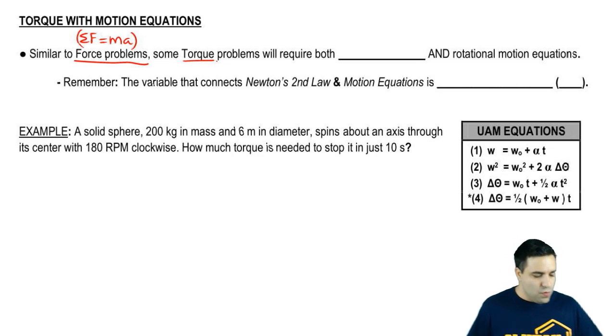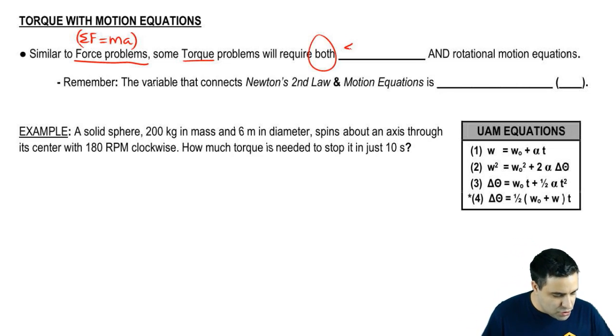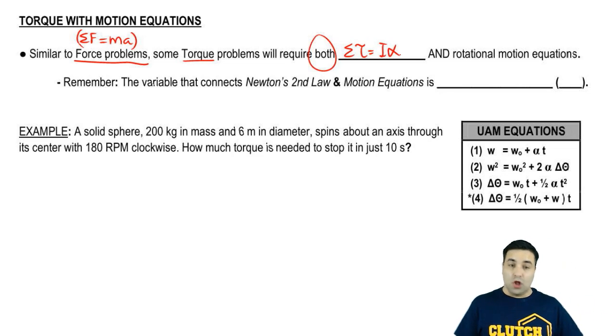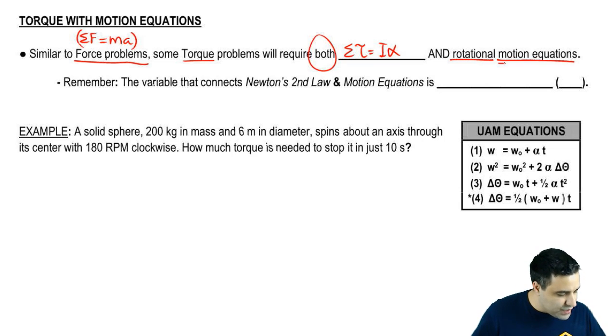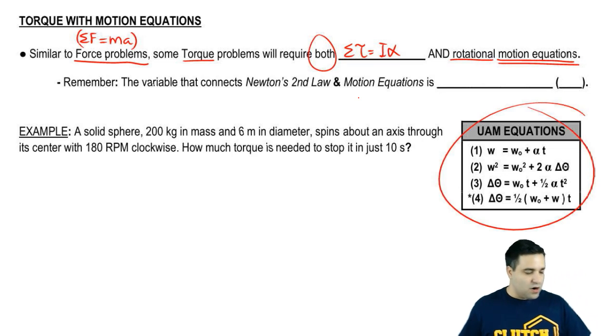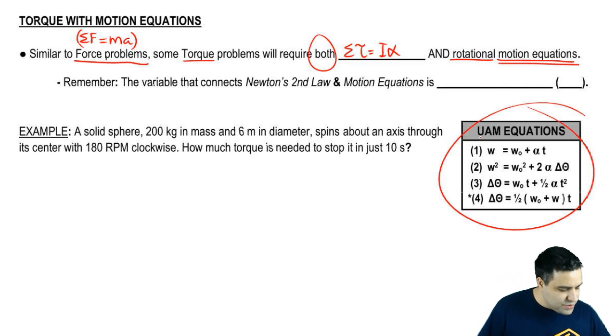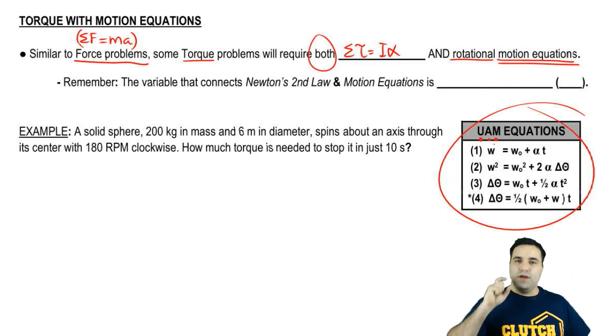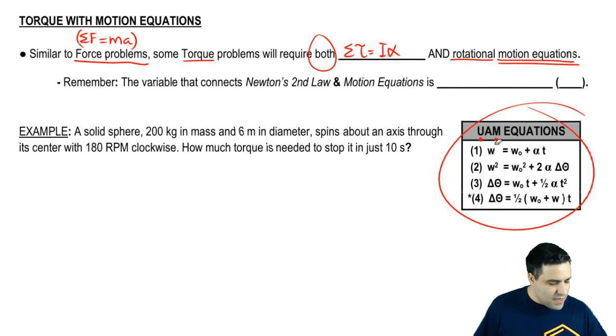Some torque problems will require both torque equals I-alpha, which is the rotational version of Newton's second law, and rotational motion equations. Motion equations are UAM equations, uniformly accelerated motion, kinematics equations, motion equations, whatever you call it. We got three to four of these guys.